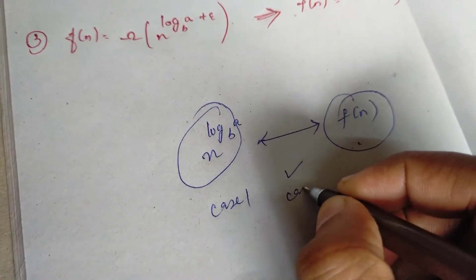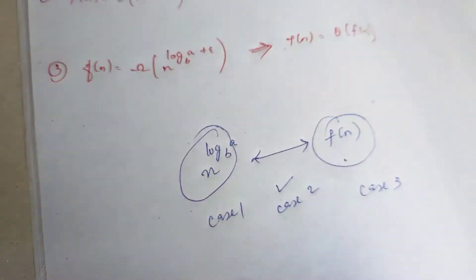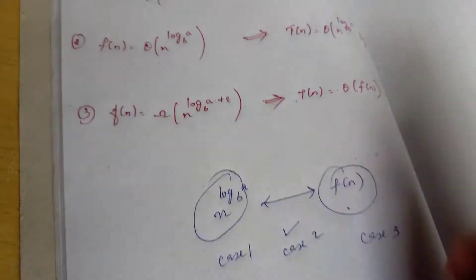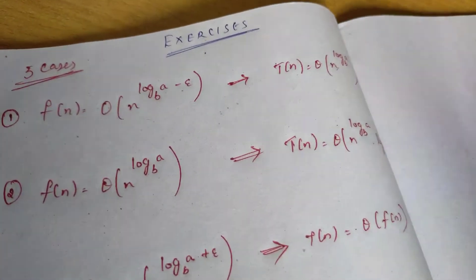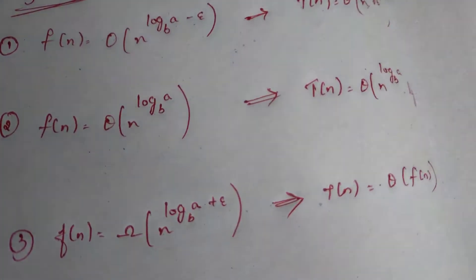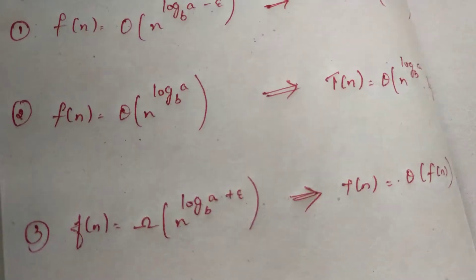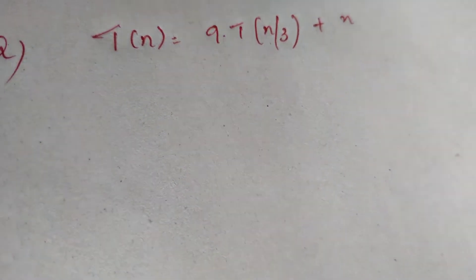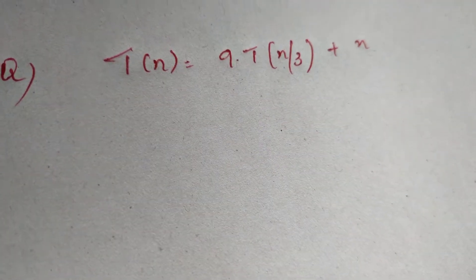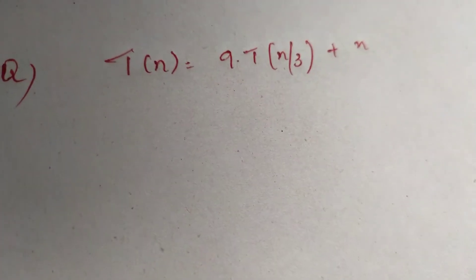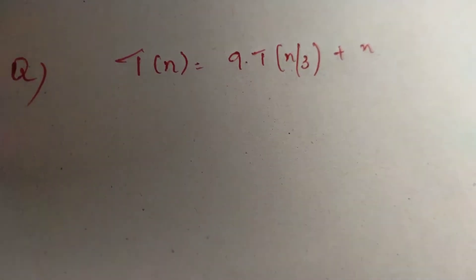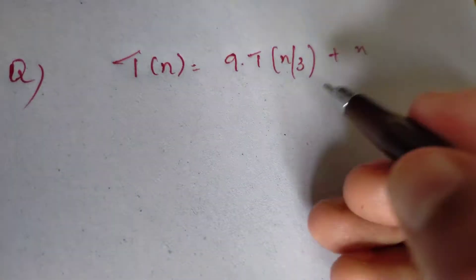We apply case 2. Let's do one example. Here is the question: T of n equals 9T(n/3) plus n.